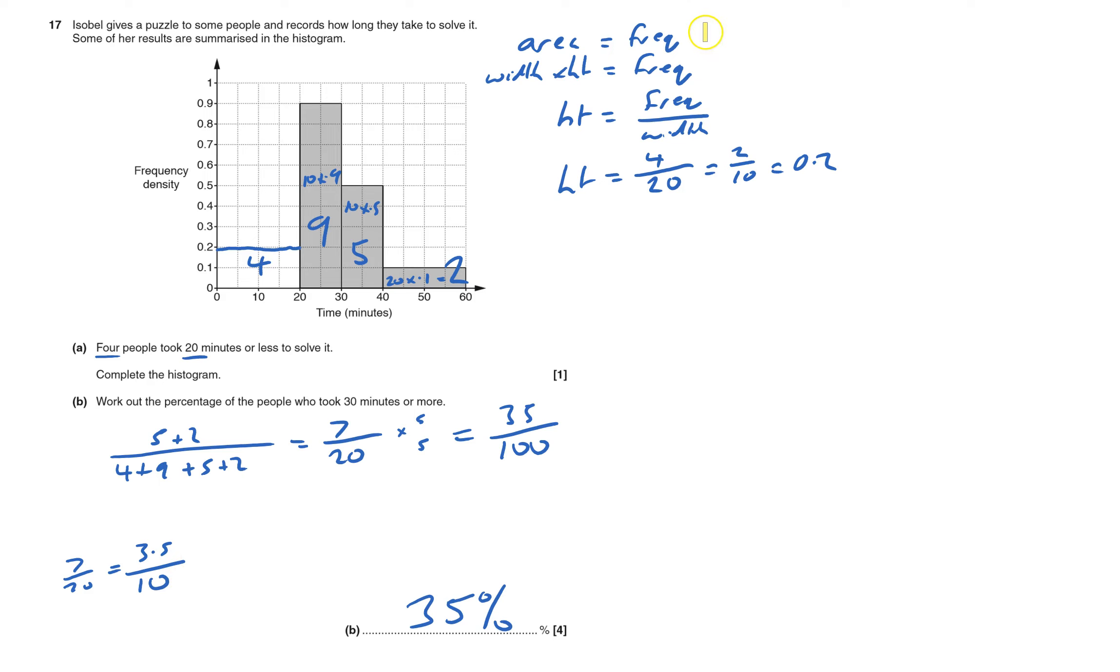The key thing with all of this stuff is that bit there to start off with. Once you get that area equals frequency, you know the area of the bar is the width times the height, and then you can rearrange that formula depending on what you want to work out. And that's 17 done.